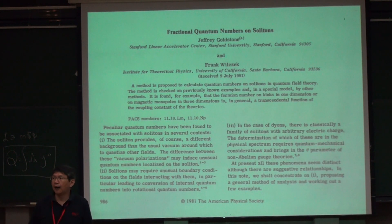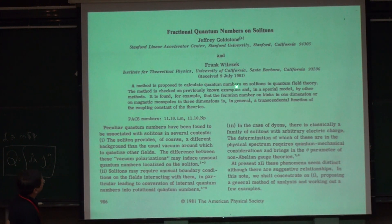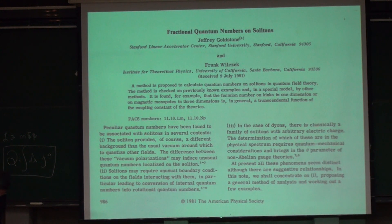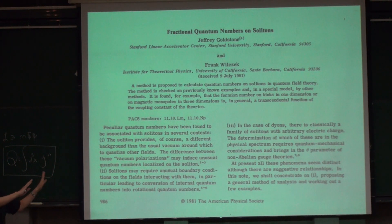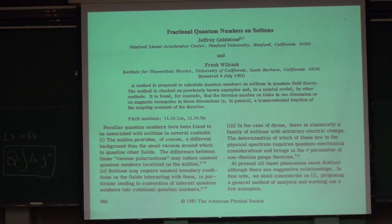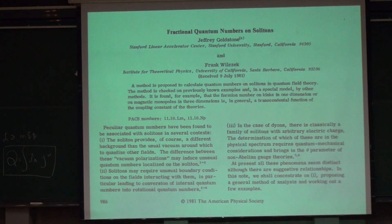I would like to mention a further application of the chiral anomaly. In 1981 — and there were even earlier papers, Jackiw et al. in the 1970s — there was work on so-called fractional charge numbers on solitons. Fractional charge numbers also figure prominently in discussions of topological insulators.